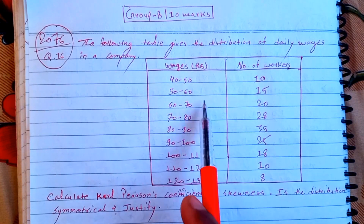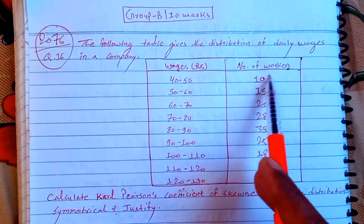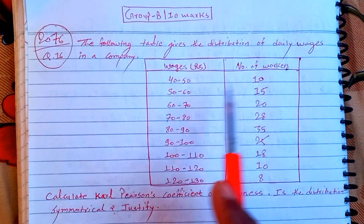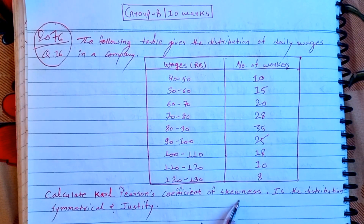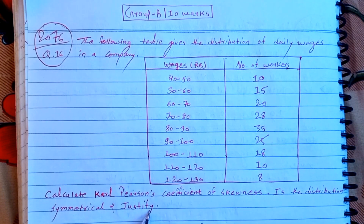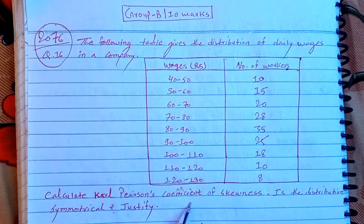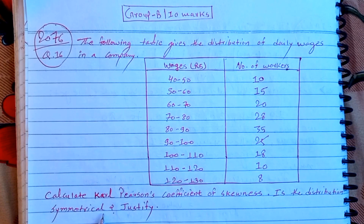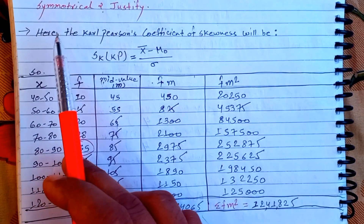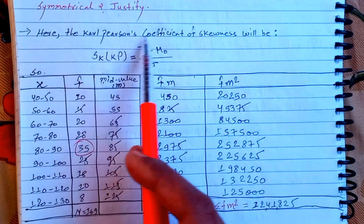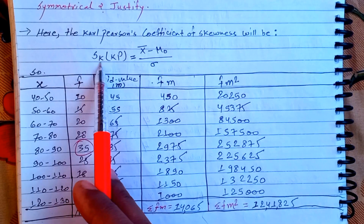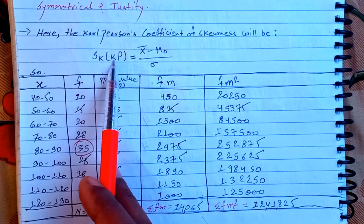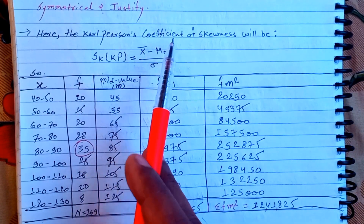Now, for this question, we need to find the Pearson's coefficient of skewness. The formula for Pearson's coefficient of skewness — SK (KP) — is: SK = (mean minus mode) divided by standard deviation. This is the formula: x-bar minus mode, divided by standard deviation.